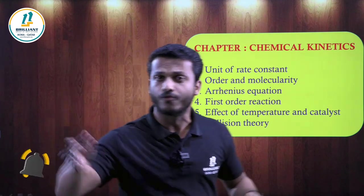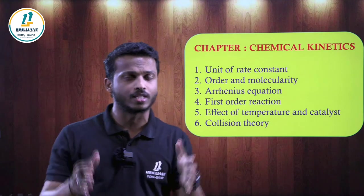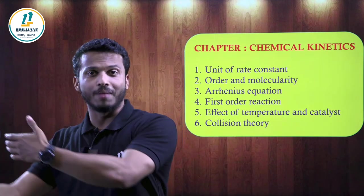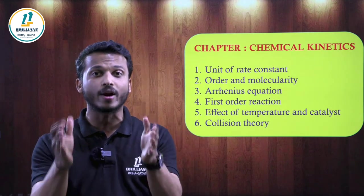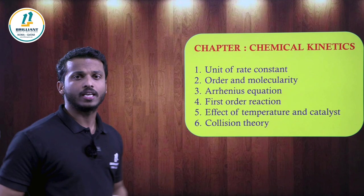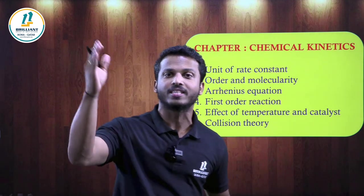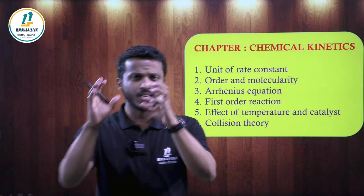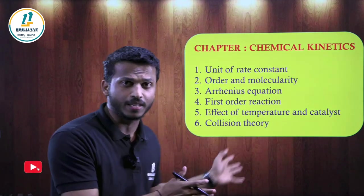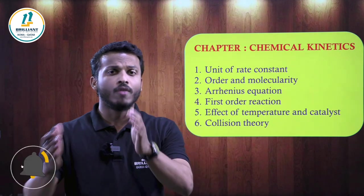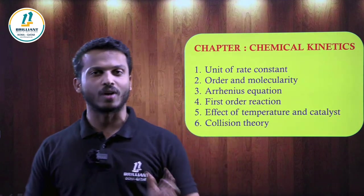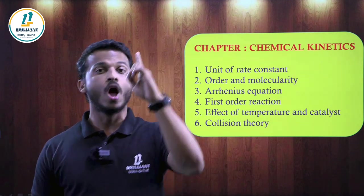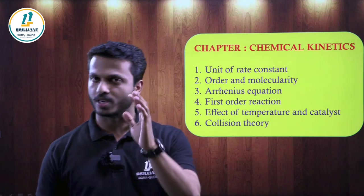Order and molecularity — study around four differences: what is order and molecularity, which is experimental, which is theoretical, which can be zero and which cannot, and which is applicable to elementary steps vs complex reactions. The Arrhenius equation is very important: k = A·e^(−Ea/RT). The graphical method for the Arrhenius equation is important. Through Arrhenius equation, when T₁ and T₂ are given, use: log(k₂/k₁) = Ea/2.303R × (1/T₁ − 1/T₂) to calculate activation energy.